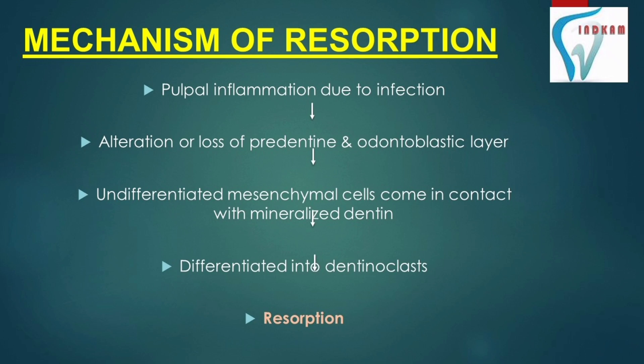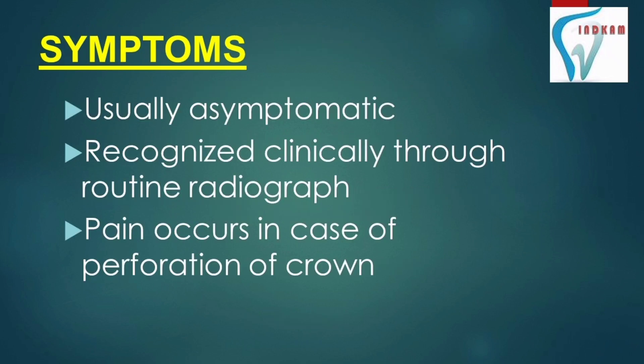The mechanism of resorption: pulp inflammation due to infection occurs, which results in alteration or loss of predentine and the odontoblastic layer. Undifferentiated mesenchymal cells come in contact with mineralized dentine and differentiate into dentinoclasts, which results in resorption.